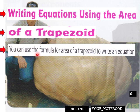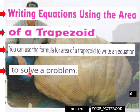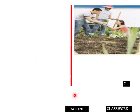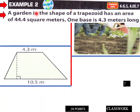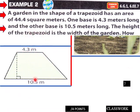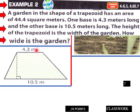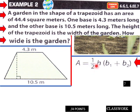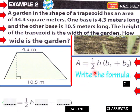Writing equations using the area of a trapezoid: you can use the formula for the area of a trapezoid to write an equation to solve a problem. A garden in the shape of a trapezoid has an area of 44.4 square meters. One base is 4.3 meters long and the other base is 10.5 meters long. The height of the trapezoid is the width of the garden. The formula for the area of a trapezoid is A = one-half times H times (b1 + b2).